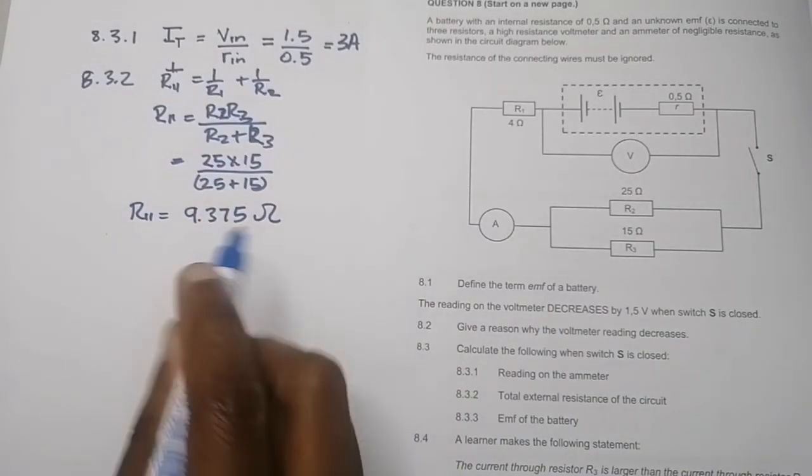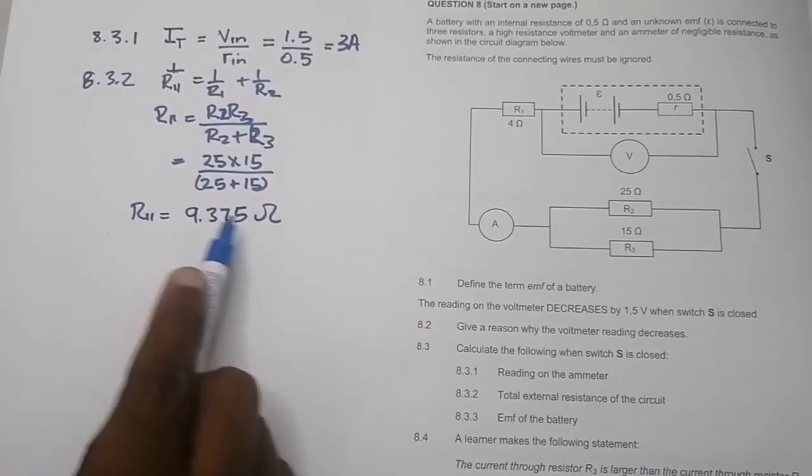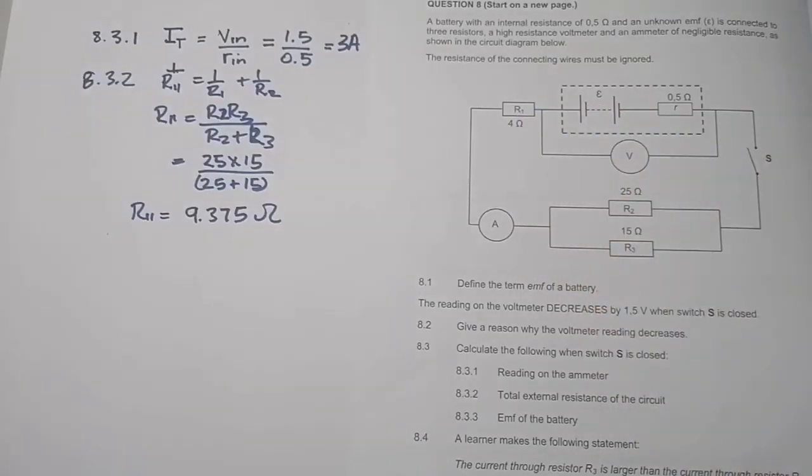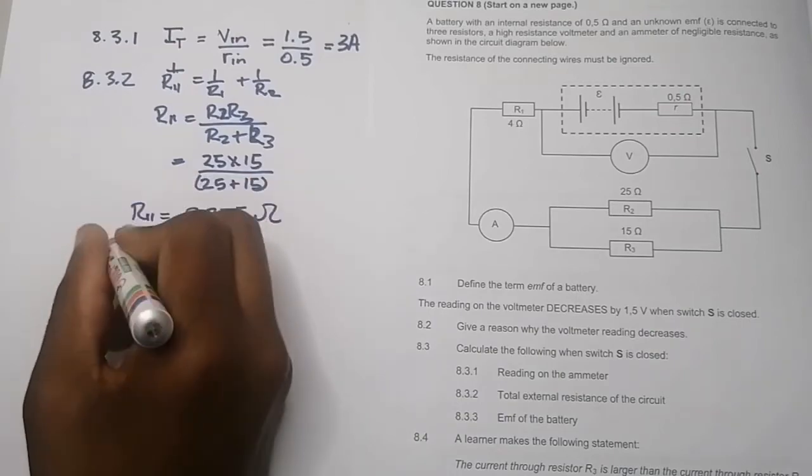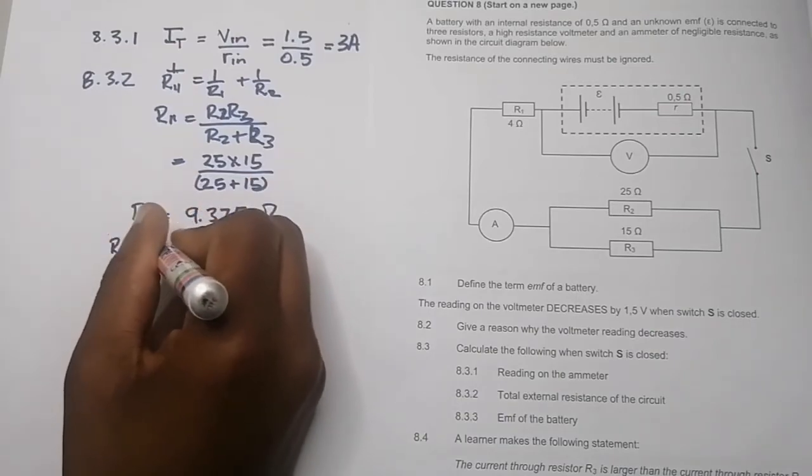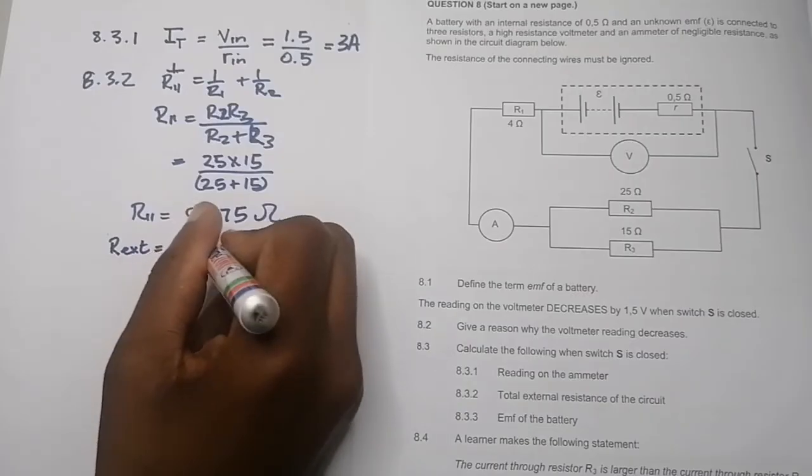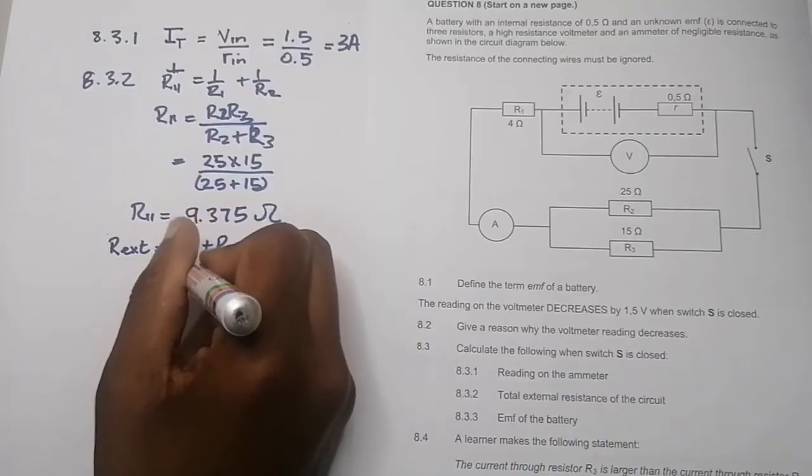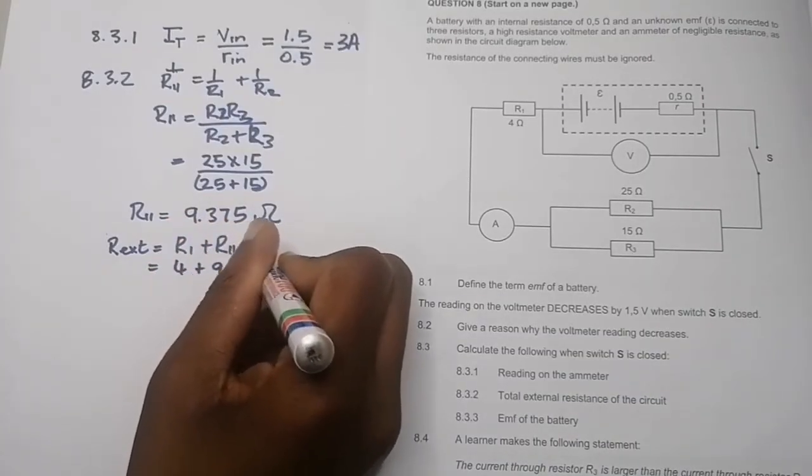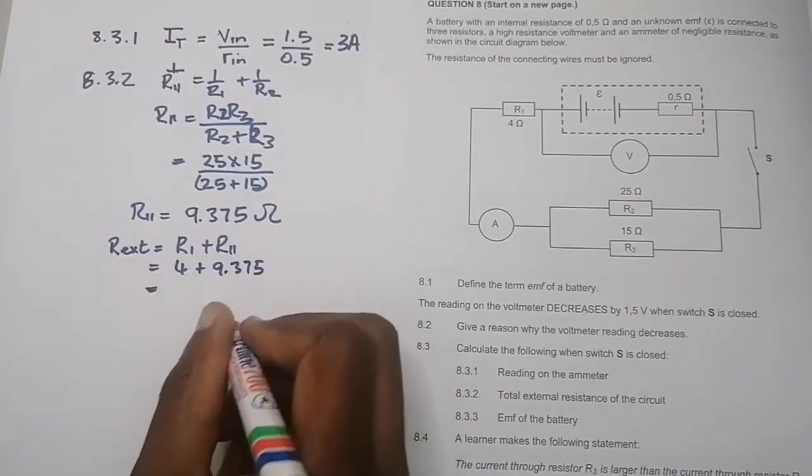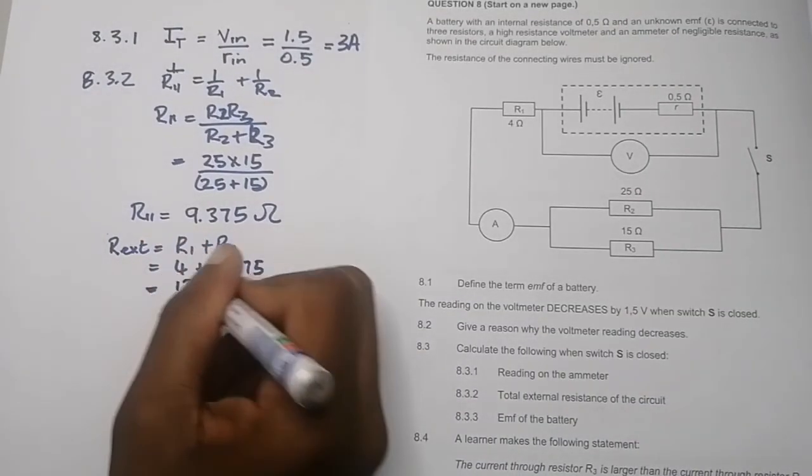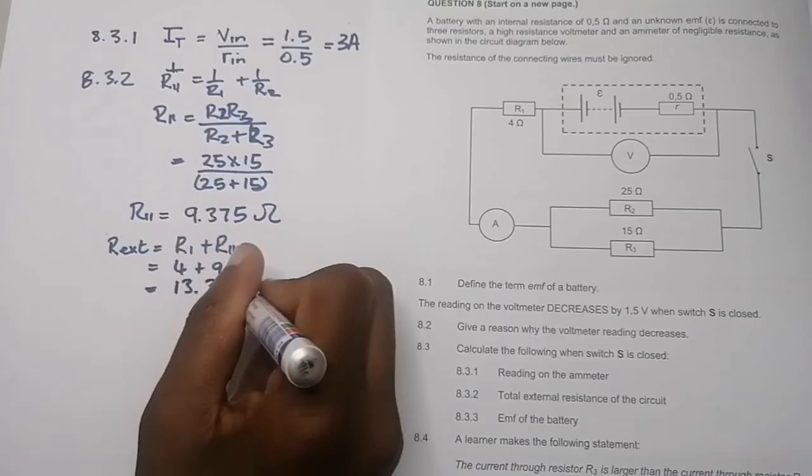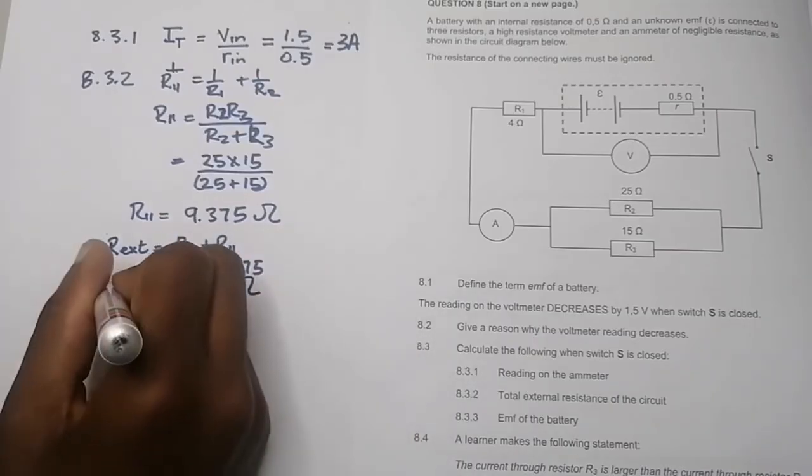That's not our final answer. This resistor, the combination of these two, is now in series with R1. So our R external would be R1 plus R parallel, which is 4 plus 9.375, giving us 13.38 ohms.